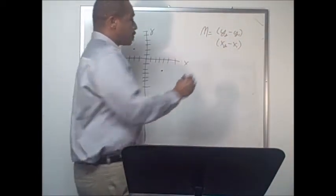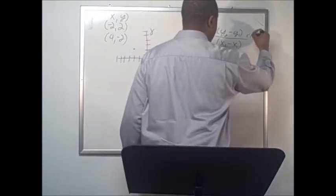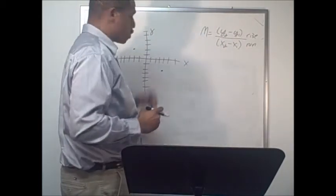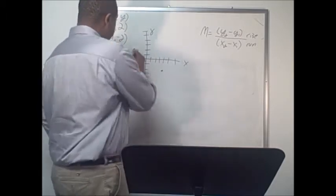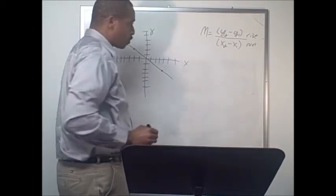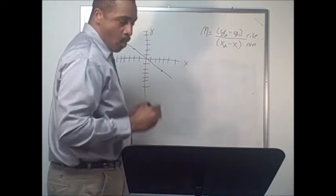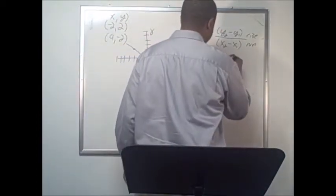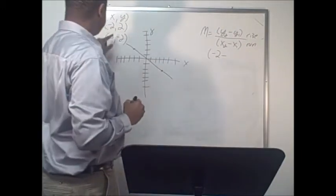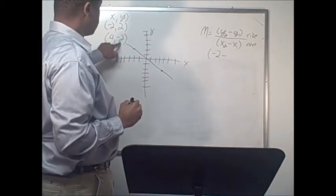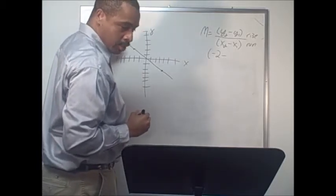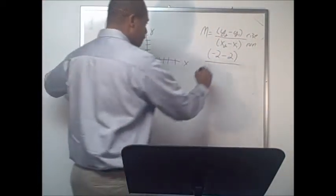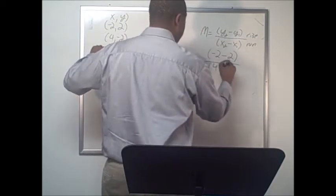The formula is rise over run — we can give more explanation about this in further lessons, but we're just working on this one problem. We are looking for the slope of this line between these two points. We're going to take y2 minus y1: that's negative two minus two. Then we take x2 minus x1, which is four minus negative two — just plugging numbers into the formula.